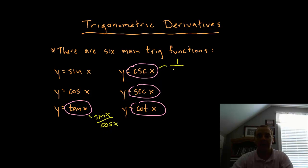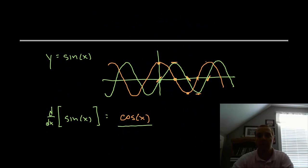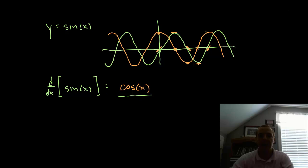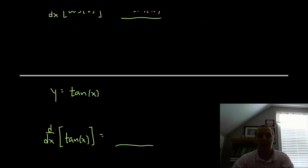Cosecant is defined as 1 over sine x, secant is defined as 1 over cosine x, and cotangent is the reciprocal of tangent, which makes it cosine x over sine x. So being that I can write all six in terms of sine and cosine, and I know the derivatives of sine and cosine, that will allow me to find the rest of the derivatives.